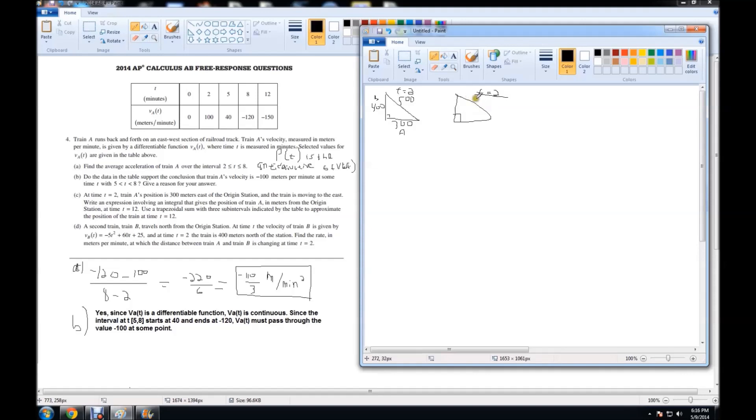Now, looking at the rate triangle, we know that the rate of A at time T equals 2 is 100, because it gives us the velocity function, and the velocity function is the speed, which is a rate. Here we have it: at time T equals 2, it's 100. For train B, we don't have it. However, they gave us the velocity function right here. So all we have to do is simply plug in 2, and we'll have the rate at which it's going further north or south, wherever it's going.